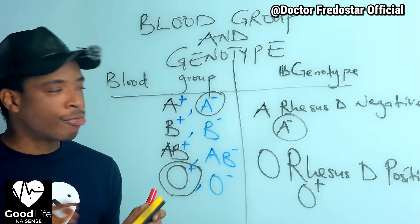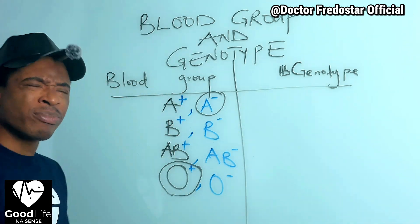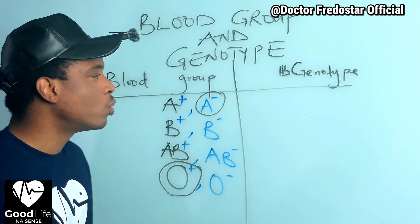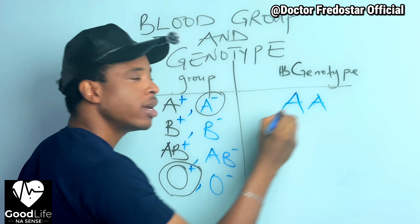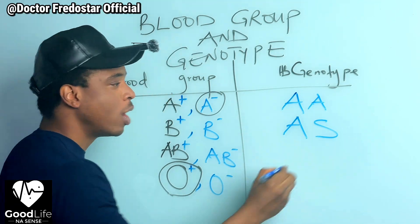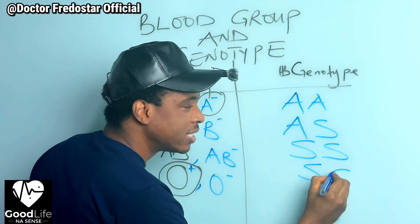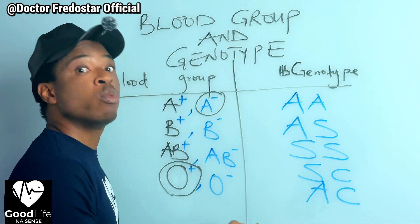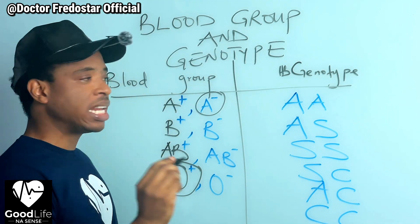Now let us go to your genotype. What is your genotype? This one will shock you. We have AA, we have AS, we have SS, we have SC, we have AC, and we even have CC.